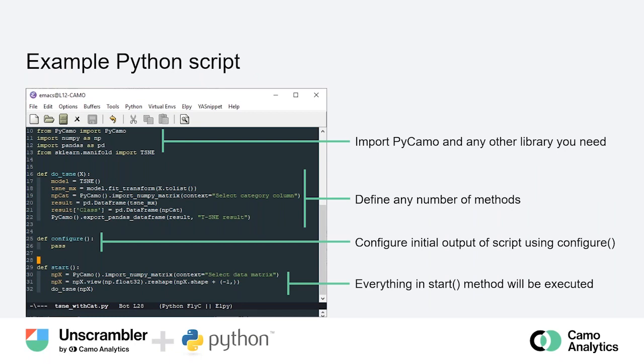Here's what an example Python script can look like — this is shown in a text editor, and any data scientist familiar with Python will recognize what's happening. First you import all the libraries you need. One of the libraries is called pycamo and is shipped with Unscrambler 11. You install this pycamo library in your favorite Python environment and then call it from Unscrambler.